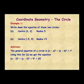Starting off with part a, we know the general equation of a circle is given by the formula x minus a all squared plus y minus b all squared equal to r squared.